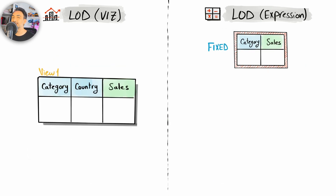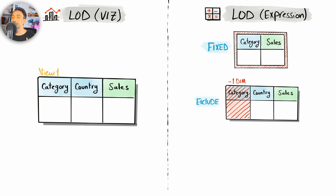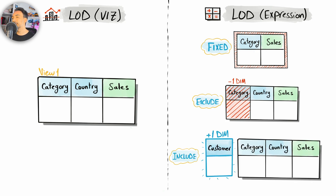To summarize: the FIXED function is very static — it doesn't care about the dimensions in the visualization and is completely independent, staying the same as you change the view. But EXCLUDE and INCLUDE depend on the visualization. EXCLUDE removes one dimension from those presented in the view, while INCLUDE adds one more dimension to those presented in the view. Now we have an understanding of how these three functions work in Tableau, so let's go back to practice them.